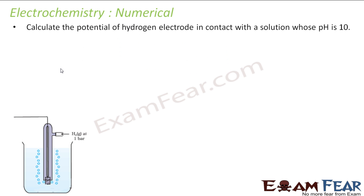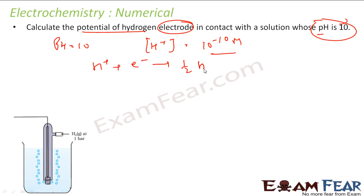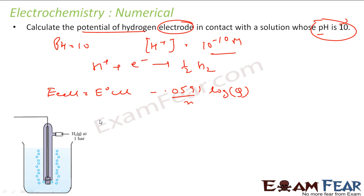The Nernst equation can also be used to find E from pH. Here, we need to calculate the potential of a hydrogen electrode in contact with a solution of pH 10. pH = 10 means [H⁺] = 10⁻¹⁰ M. The hydrogen electrode reaction is H⁺ + e⁻ → ½H₂. E_cell = E°_cell − (0.0591/n) × log Q, and E°_cell = 0 for the standard hydrogen electrode.